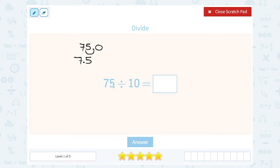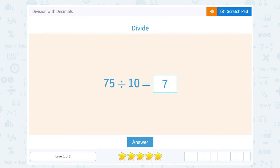So when you're dividing by 10, think of it as moving your decimal point one place or making it one place value smaller. So this would be 7.5.